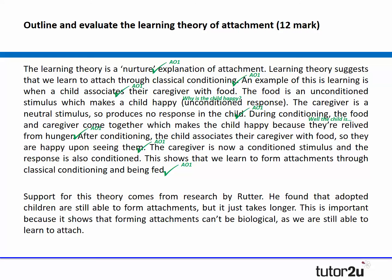Then they go on to evaluation: 'Support for this theory comes from research by Rutter. He found that adopted children were still able to form attachments, but it took longer.' A very vague description of Rutter and not entirely accurate. 'This is important because it shows that forming attachments can't be biological.' I think that's a really bad use of the word 'can't' — it's very definitive. They should be using phrases like 'it suggests' and 'we're still able to learn to attach.' And how does this support the learning theory? It's not a well-defined or elaborated evaluation paragraph — certainly not an effective one.